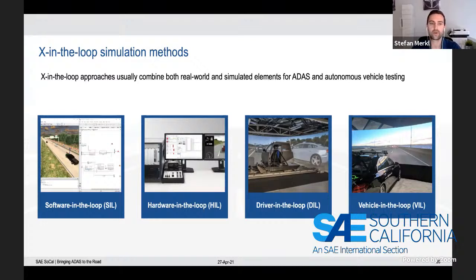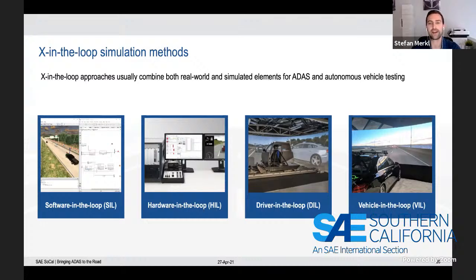With the vehicle-in-the-loop method, a real autonomous vehicle and a human driver inside it operate in a simulated environment. The vehicle drives individual traffic either by itself or controlled by the driver when needed — for example, it's good when evaluating warning systems and how people would react to them.